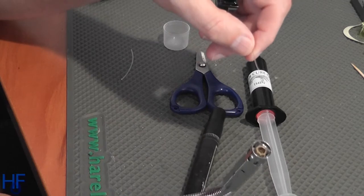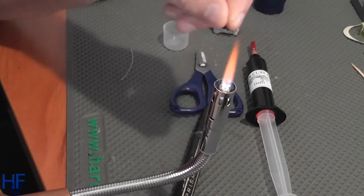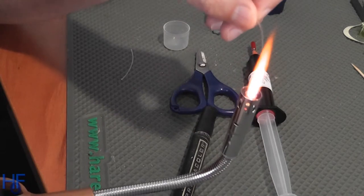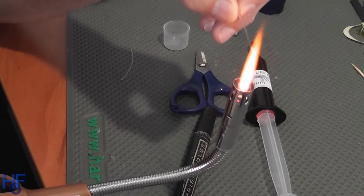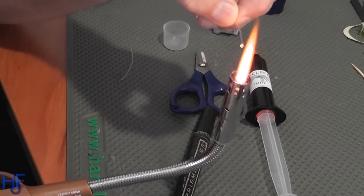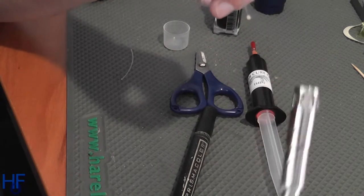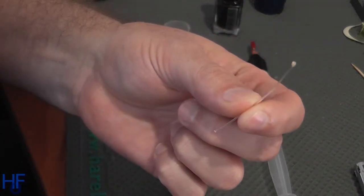So first thing to do is to melt the end of the mono. So just with the flame, don't hold the mono in there or it will just continue to burn. So what we want is just in and out until you get a bit of a ball on the end of the mono like that. That's all we need.